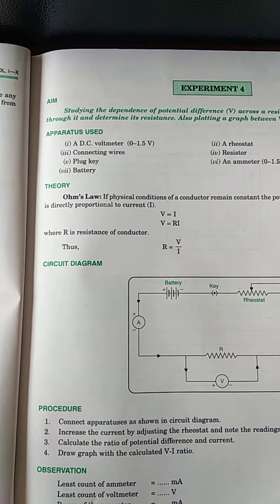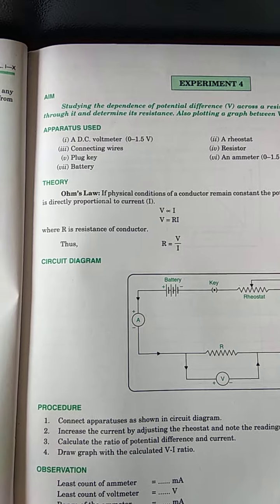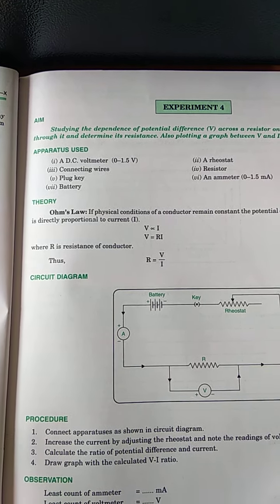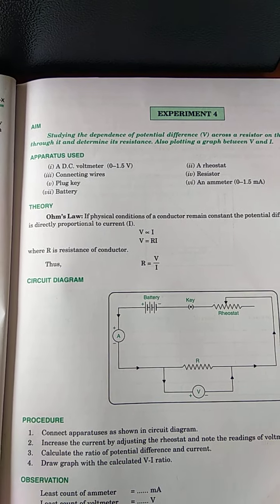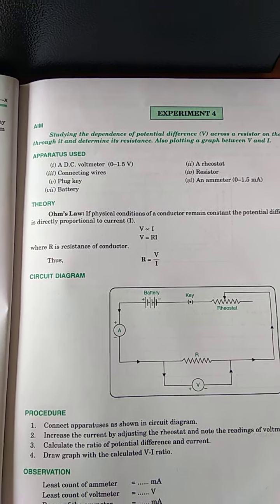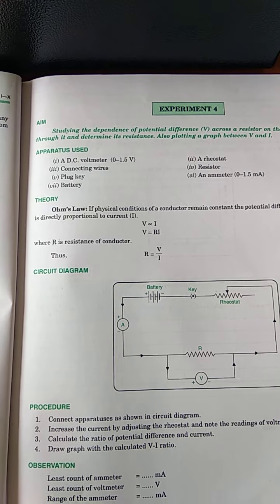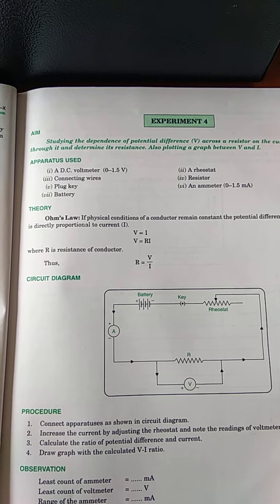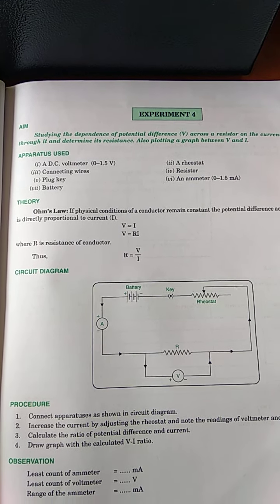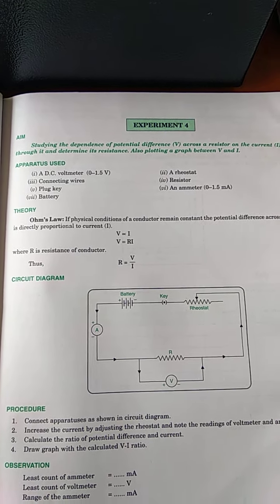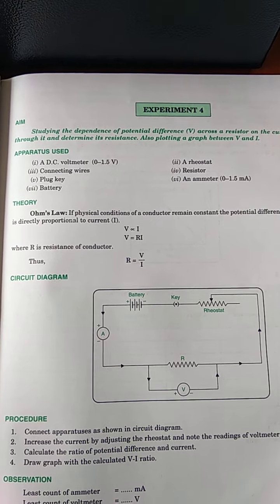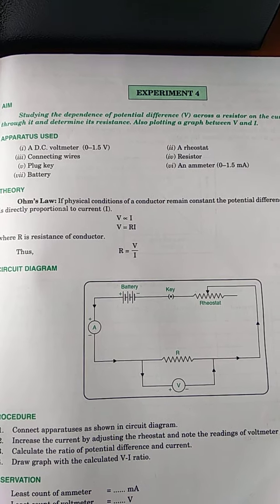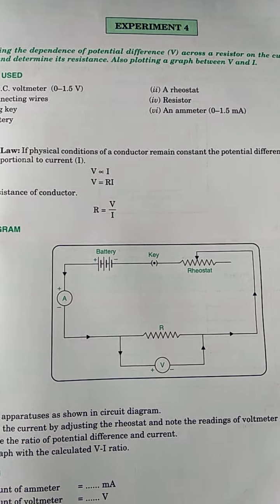So first of all we will talk about Ohm's law. What does it state? It states that potential difference V across the two ends of a conductor is directly proportional to the current flowing through it, unless the condition remain same, meaning temperature remain constant. Or we can say V is equal to IR and if we want to calculate R, it is V upon I.